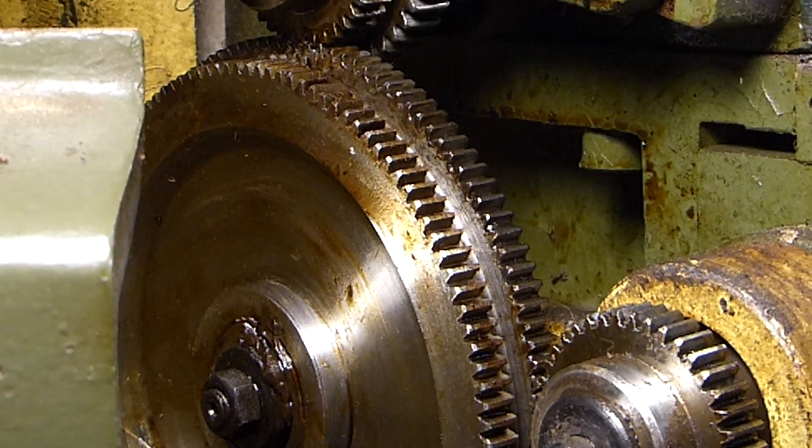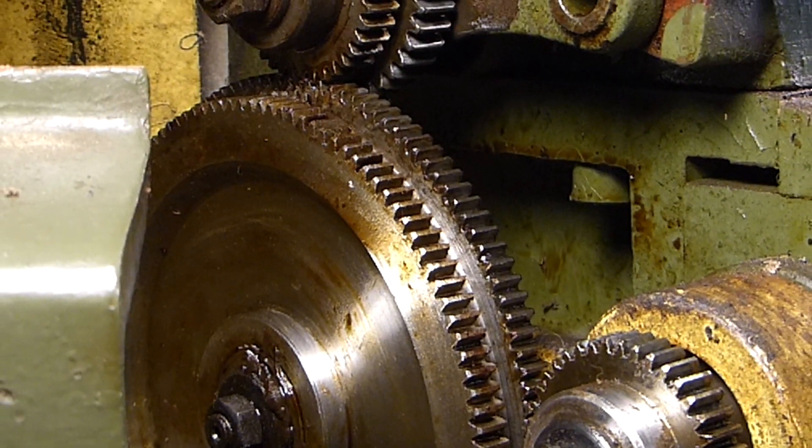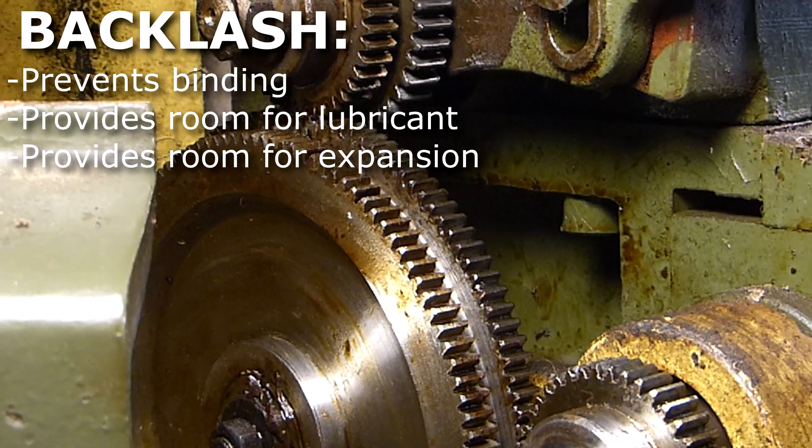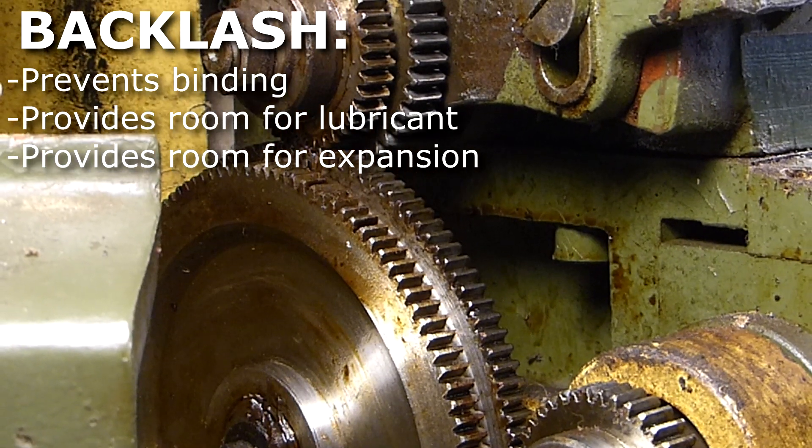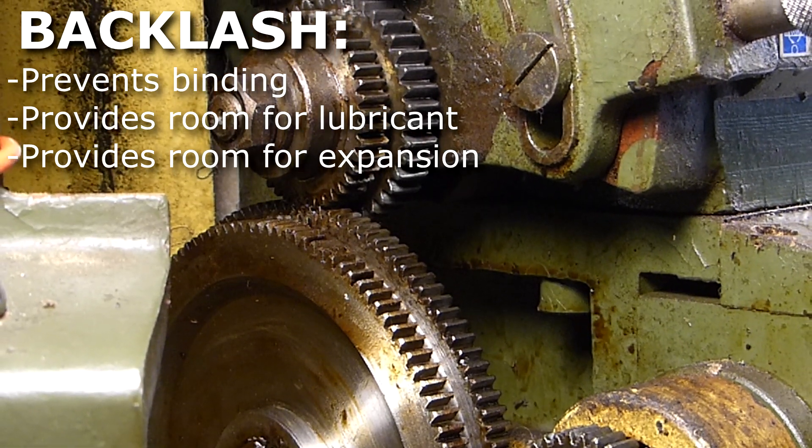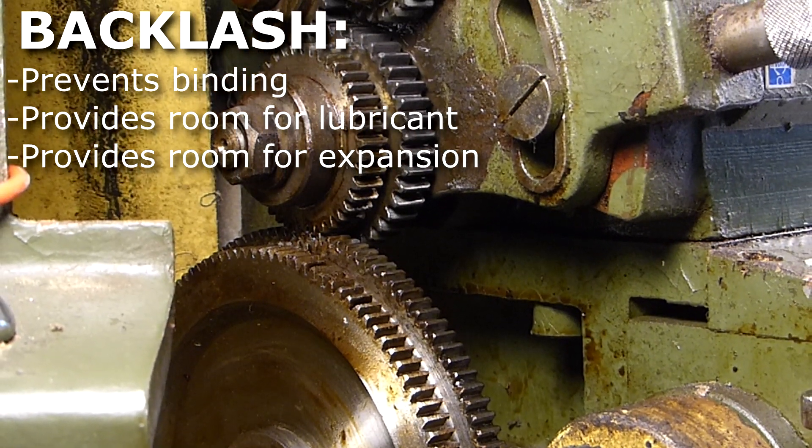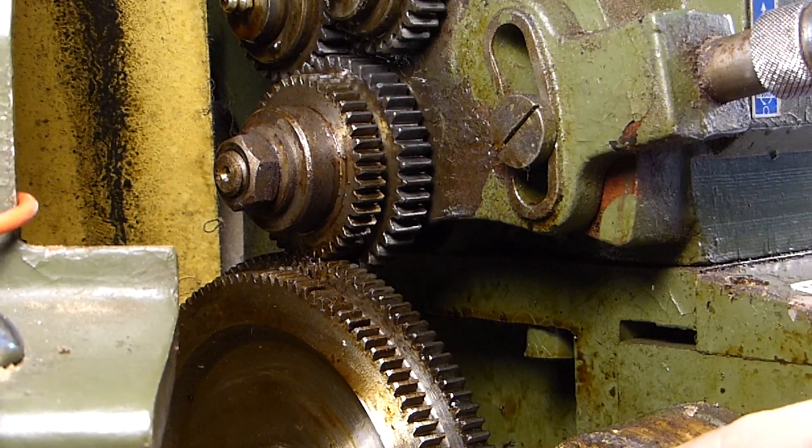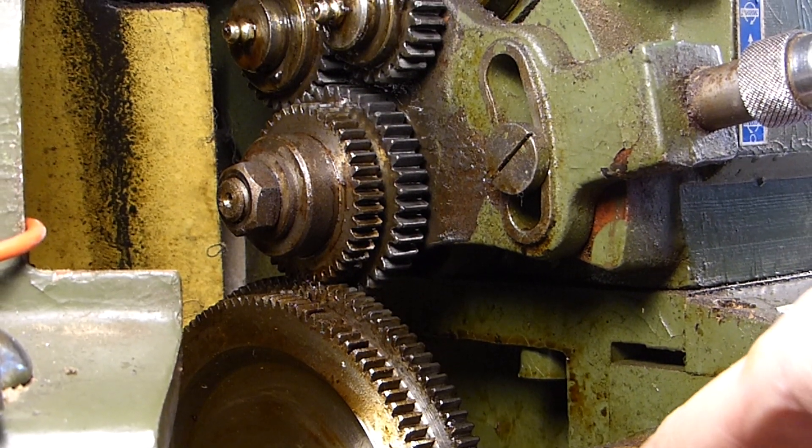On most devices, you're going to want to have at least a couple thousandths inch of backlash, and, as mentioned previously, that's to allow room to prevent binding and to allow lubricants into the space between the mechanical interfaces.